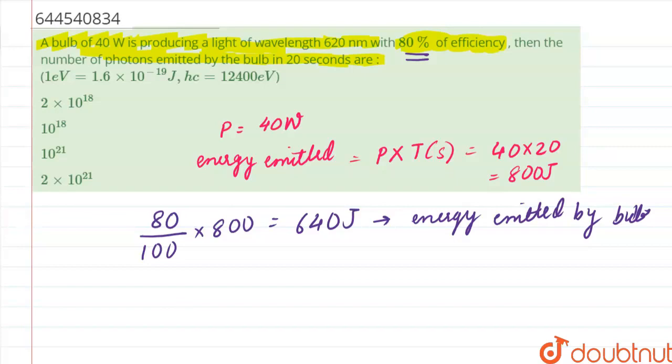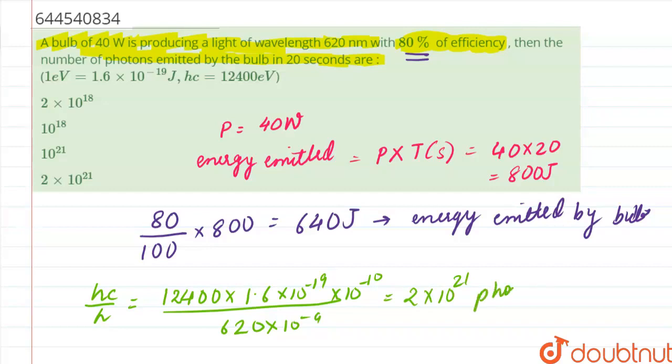So in the next we have been given then the number of photons emitted by bulb in 20 seconds. So the energy of photon is nothing but Hc by lambda. When we calculate this we will get Hc by lambda as 12400 into 1.6 into 10 raised to the power minus 19 into 10 raised to the power minus 10 divided by 620 into 10 raised to the power minus 9. So the answer of this is nothing but 2 into 10 raised to the power 21 photons.